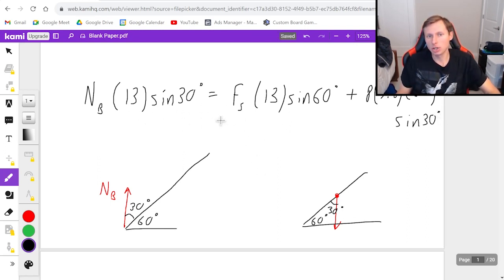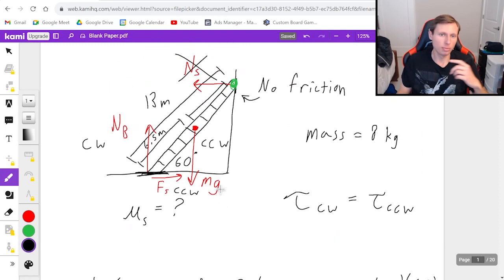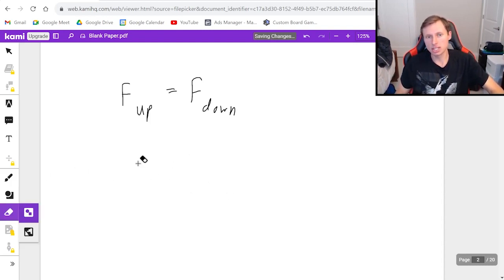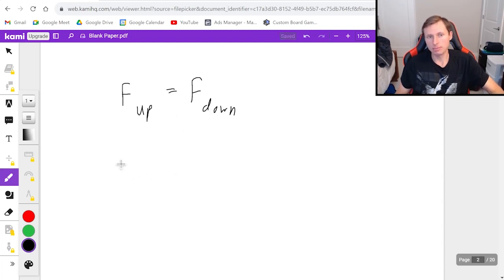Now I have everything I need to solve for Fs, the static friction force, except I don't know NB, the normal force from the bottom. The good news is I actually do know that normal force. How? Because there's only one force going up and one force going down. NB goes up and MG goes down. Those two forces have to equal each other. For rotational static equilibrium, the forces going up must equal the forces going down. So NB must equal MG, which means NB equals 8 times 9.8.